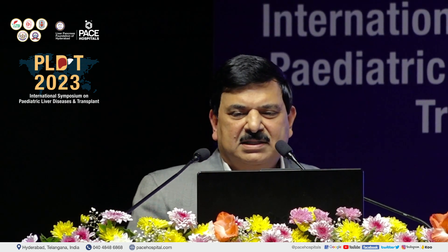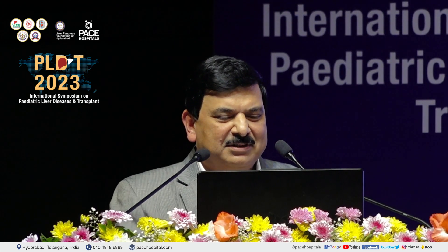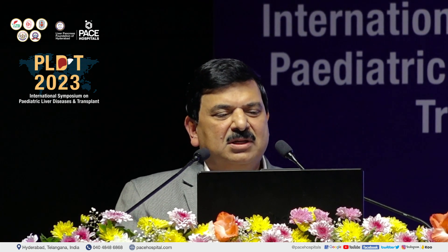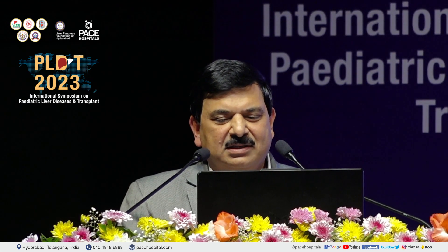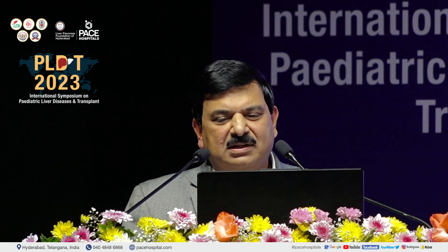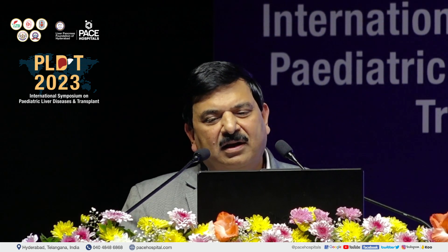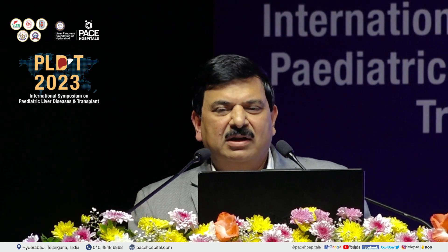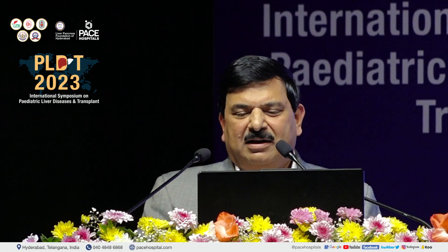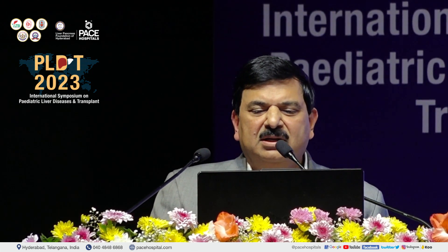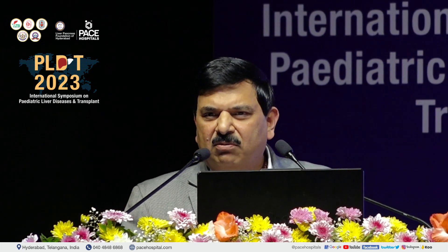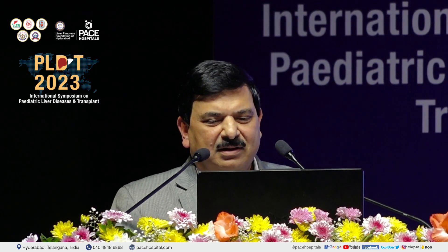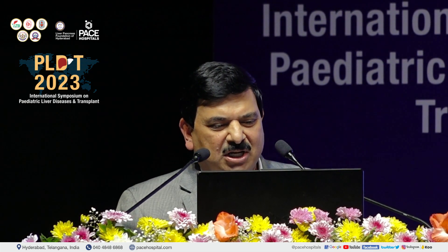A brief message: the mortality of the first variceal bleed is low in children — less than 2% — which is very different from adults where 25 to 30% may die from the first bleed. Guidelines for management of variceal hemorrhage in children are not well established, so we rely on adult literature. The common causes of bleeding in children are EHPVO and biliary atresia. We see patients of EHPVO in our unit, though biliary atresia cases were more common in institutes where I worked earlier.